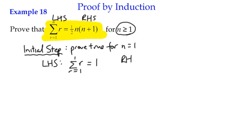On the right-hand side, we're given a formula here, or an expression at the moment, a half n, n plus 1. And when n is 1, then we've got this expression here, which gives you the value 1, which happens to be the same as the left-hand side.